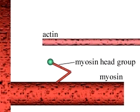Examine closely, the myosin filament can be seen to have head groups that can attach and detach from the actin filaments.